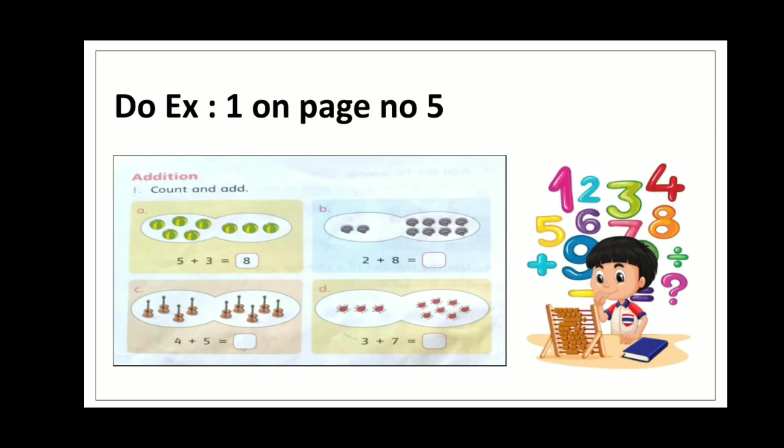Now open page number five and do exercise one. Count and add as you learn how to add the numbers. Let's count it and add in part A: five balls plus three balls are equal to eight balls. Write eight in the box.